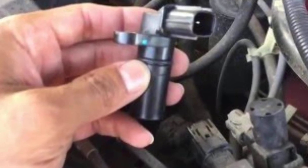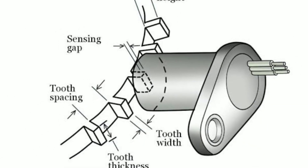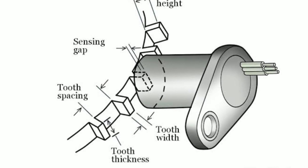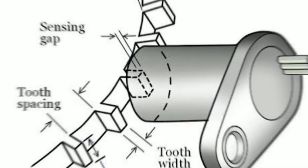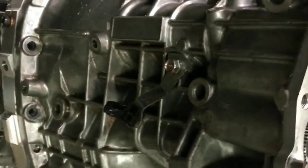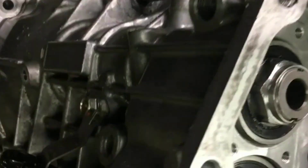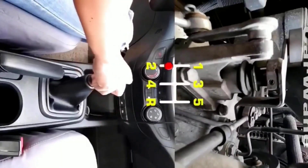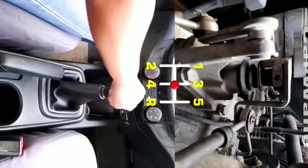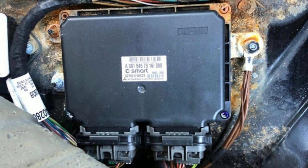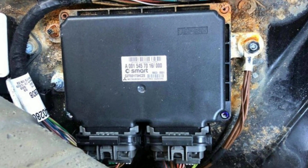The transmission speed sensor TSS is a critical component that monitors the speed of the transmission shaft. It plays a key role in providing essential data for the proper functioning of the transmission control module. In a manual transmission car, one has to manually engage a new gear after revving the engine to a certain speed. However, in an automatic transmission car, gear changes are done automatically by the transmission control module TCM, and the TCM and ECM rely heavily on the TSS to achieve this.